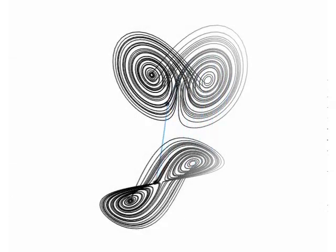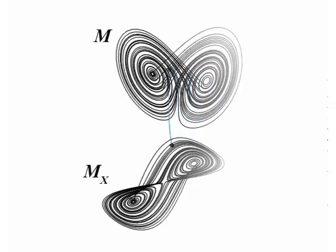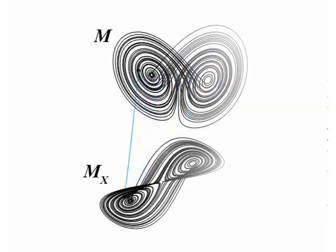Takens' theorem gives us a one-to-one mapping between the original manifold and reconstructed shadow manifolds. Here we will explain how this important aspect of attractor reconstruction can be used to determine if two time series variables belong to the same dynamic system and are thus causally related.